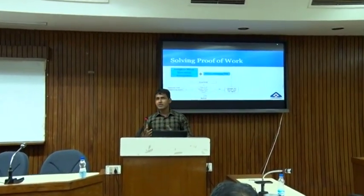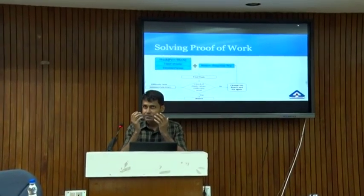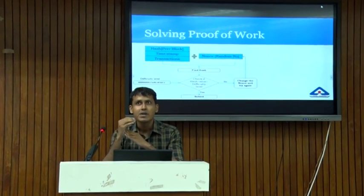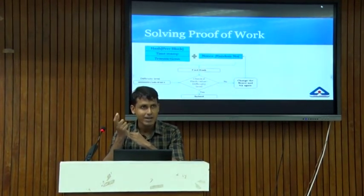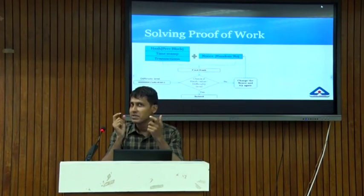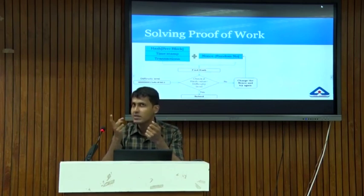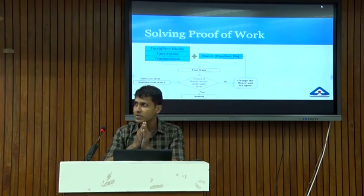The miner, in order to create a block, has to compile all transactions, add a timestamp, the hash of the previous block, and one more element: the nonce. The nonce is a random number. The puzzle is to find a random number which, when compiled with the other parameters and hashed, will produce a hash value with N number of leading zeros.